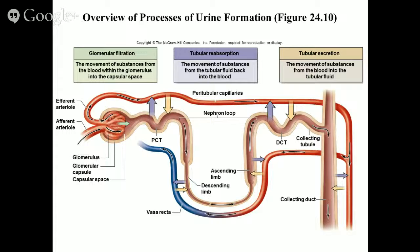Extra electrolytes, vitamins we're not using, other waste products like urea — all of that gets thrown away. It moves through the nephron into the collecting duct, then through the minor and major calyces, the renal pelvis, out through the ureter, into the bladder, and ultimately voided out through the urethra. This whole process is about separation — like pulling an entire crowd into a room and removing the innocent people one by one through reabsorption until you're left with the guilty party: the waste.